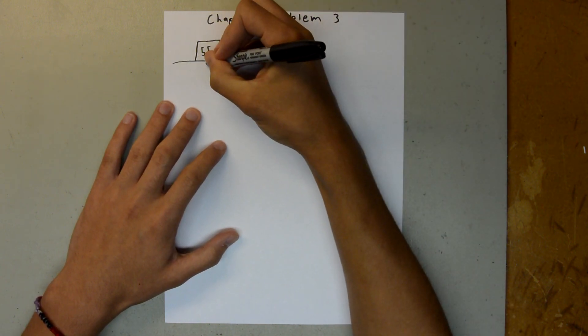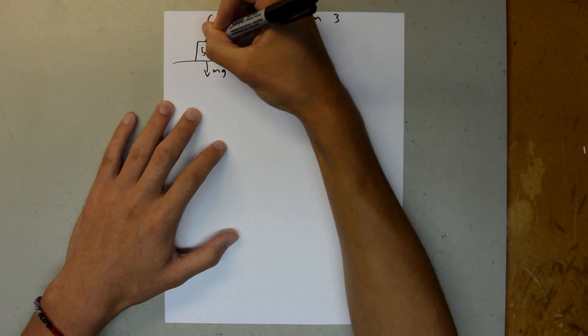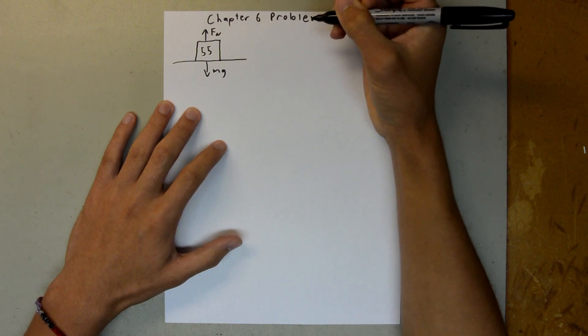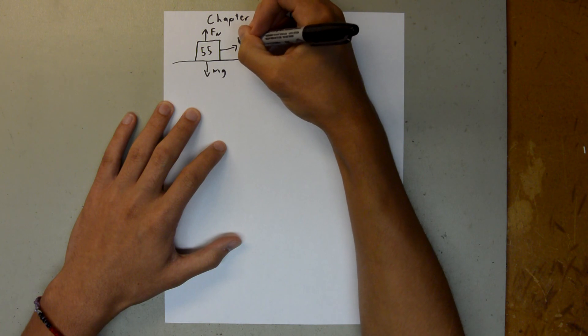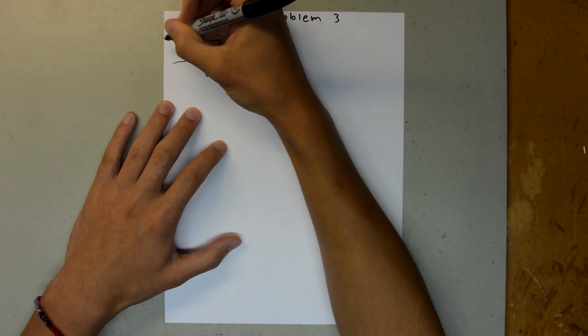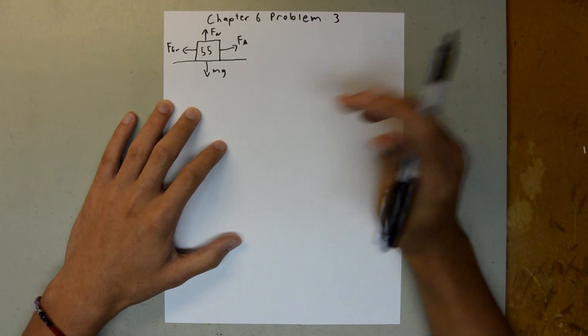And so, we know we have a weight force, mg, and we have a normal force. And it's being pushed this way with the applied force. And our force of friction is always in the opposite direction. So, that's our free body diagram.